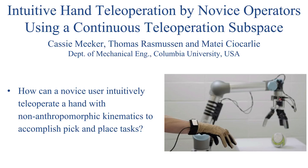Teleoperation is useful when autonomous grasping is not able to deal sufficiently well with corner cases or cannot operate fast enough. Teleoperation, which harvests the movement of the teleoperator's hand to control a robot hand, can provide an intuitive interface. However, it requires mapping between the pose spaces of the two hands of interest.